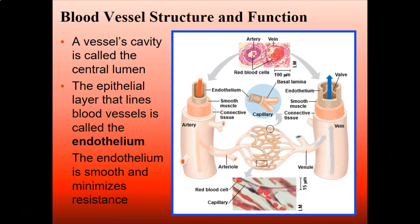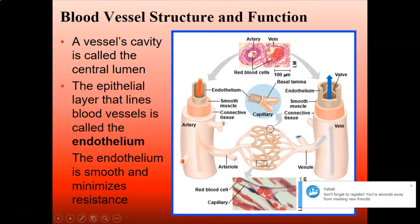So a little bit about blood vessel structure and function. A vessel's cavity is called the lumen — basically the hole inside of the blood vessel is the lumen. The epithelial layer that lines blood vessels is called the endothelium, which you can see on the inside of the vessel.